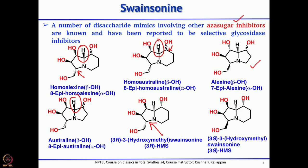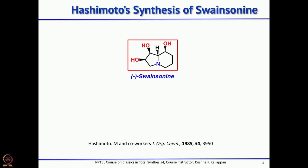Many of them have been used as glycosidase inhibitors, and several synthetic groups have worked on the synthesis of such molecules. As I said, we will talk about 3 total syntheses starting from carbohydrates, and let us start with Hashimoto's total synthesis of swainsonine.